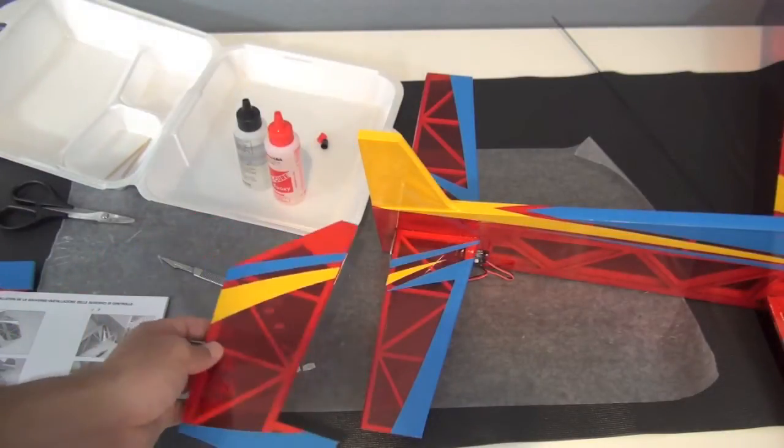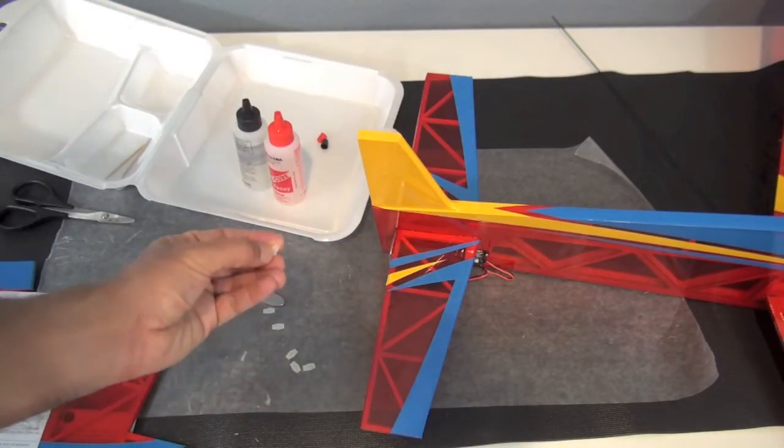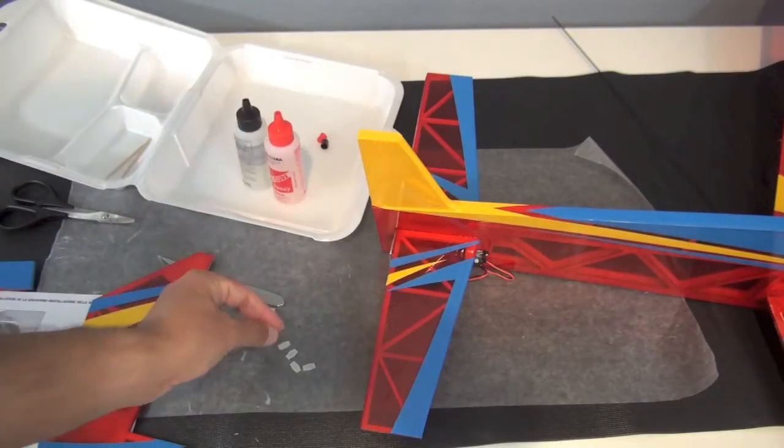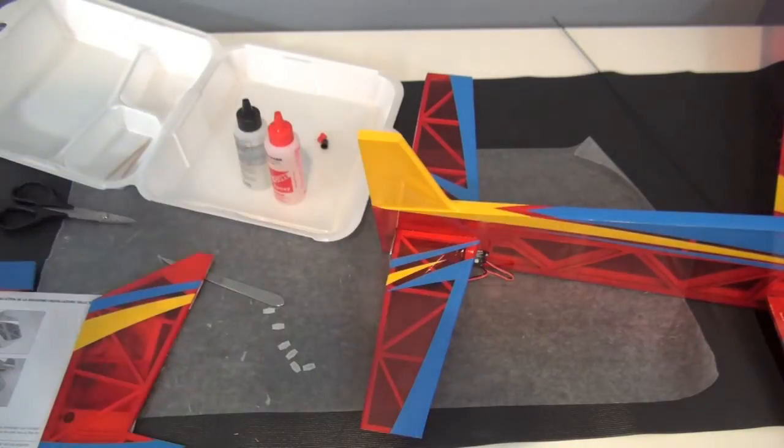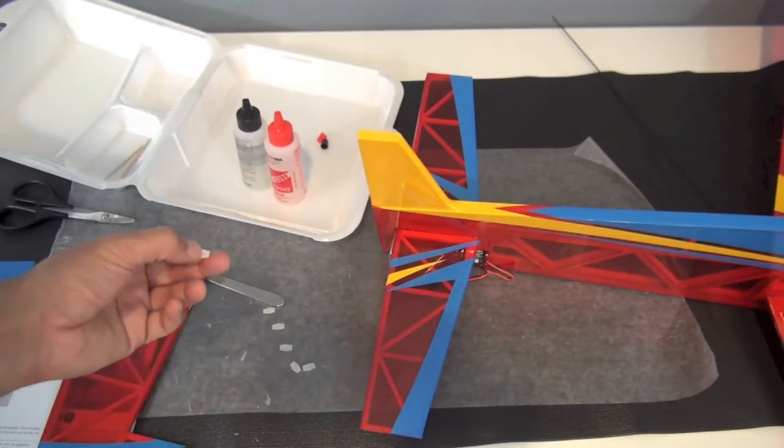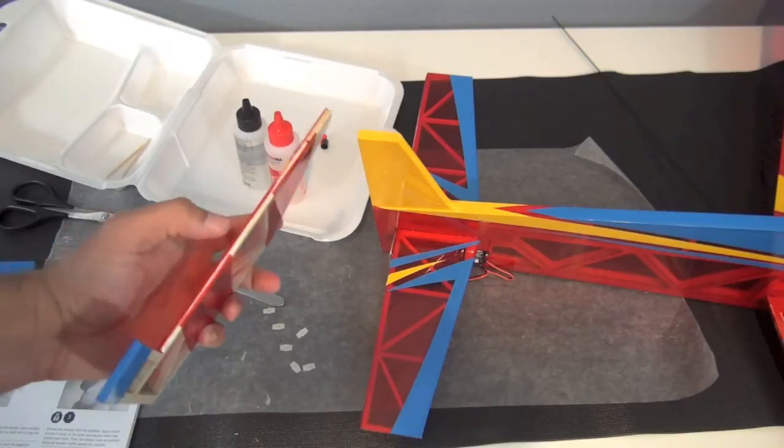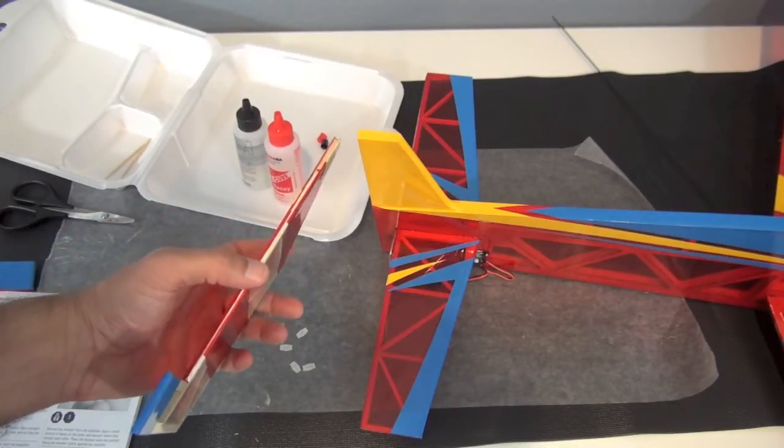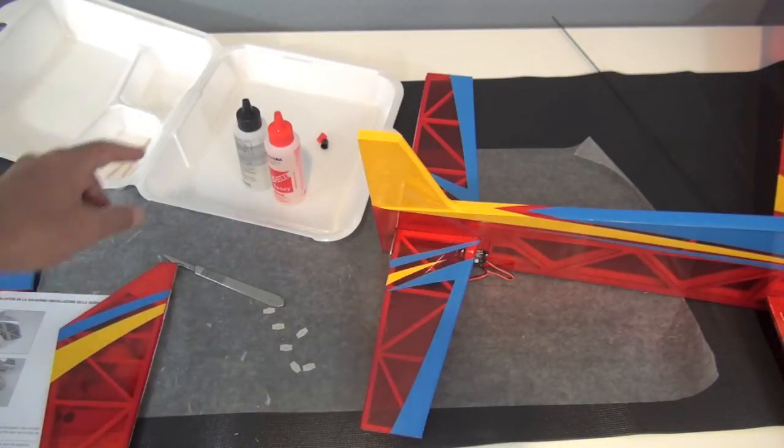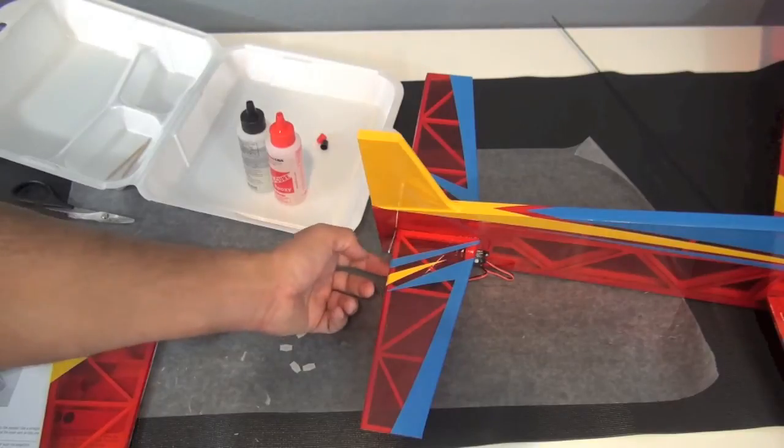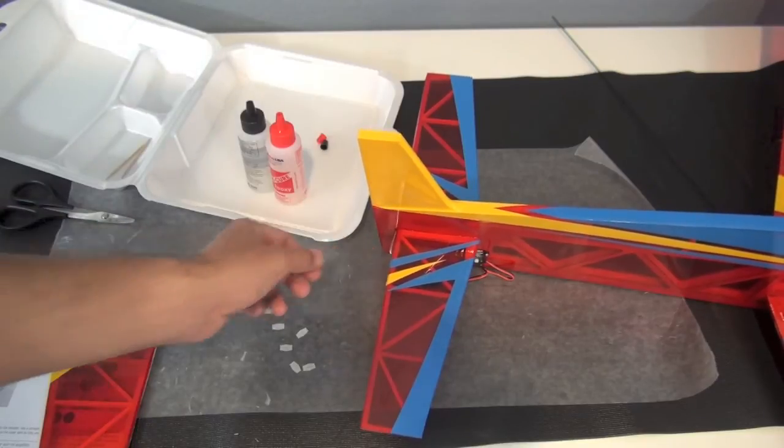All right, guys, we're ready to actually join the elevator up to the horizontal stabilizer. And this step calls for using CA hinges. Little tiny CA hinges. They come on a sheet and you just cut them out pretty easy. So the ailerons and the rudder also use the CA hinges. So I'm just going to go over this one time. And then those use the same method. The slots are already pre-cut into all of the surfaces. So you just need to place the hinges in. And also for this step, we'll be using some five minute epoxy. And that's just to glue the elevator joiner into the elevator halves.